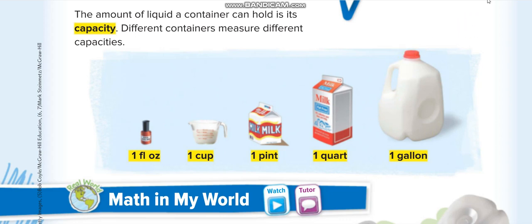I will tell you the conversions. One cup is equal to eight fluid ounces. One pint is equal to two cups. One quart is equal to two pints, and one gallon is equal to four quarts. We are not using these conversions in this lesson; we will use them in the next lesson. Here we will just estimate.